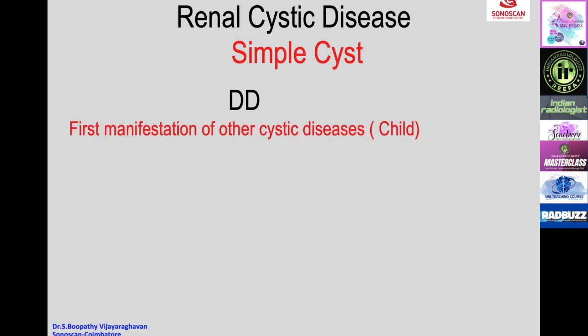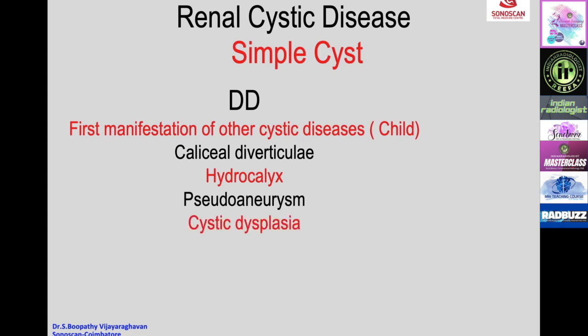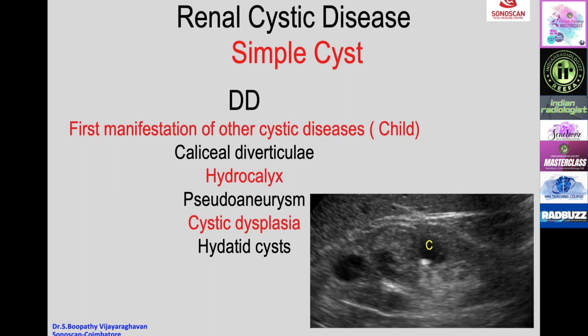Differential diagnosis for a simple cyst includes the possibility that it may be a first manifestation of other cystic diseases like polycystic kidney, particularly in a child. Other differentials are calyceal diverticulum, hydrocalyx, pseudoaneurysm, cystic dysplasia, and hydatid cyst. An example shows a cyst with a calculus at the neck, indicating hydrocalyx due to an impacted calculus—this is focal caliectasis, not a cyst. A calyceal diverticulum cannot be differentiated from a cyst by ultrasound but will fill with contrast on IVP as it communicates with the calyx.